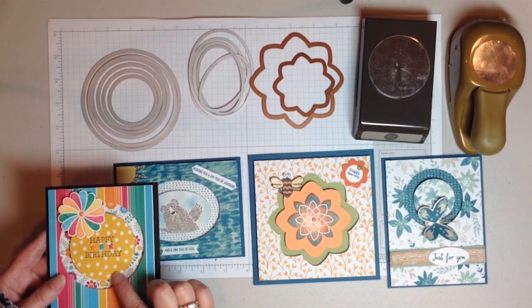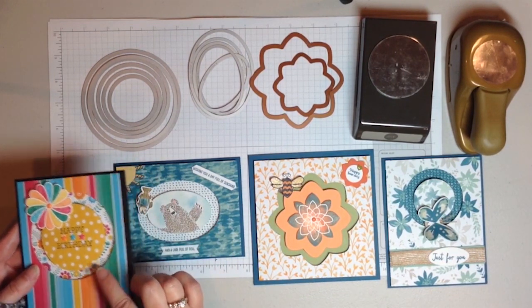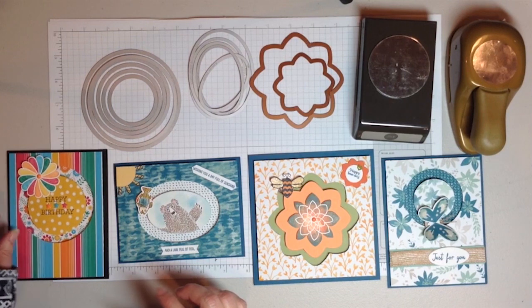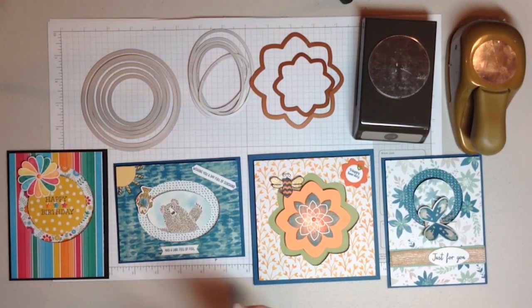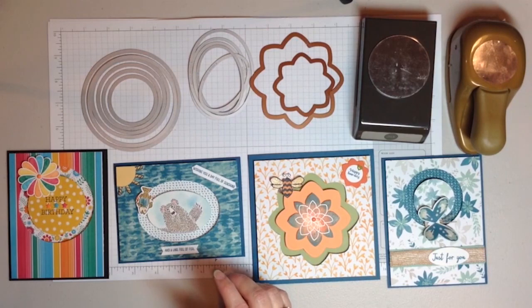The key to circle spinner cards is this negative space right here. So you need to use products that are concentric and you can look through your stash to see various things that might work for that.